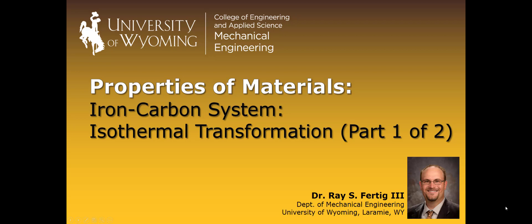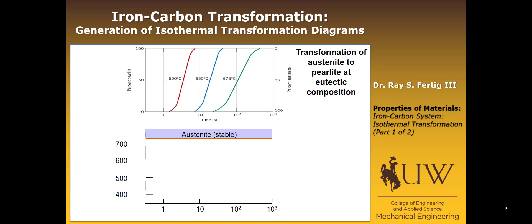In this lecture, we want to talk about the isothermal transformation of the iron-carbon system. This is part one of two. We're going to focus on what the isothermal transformation curves look like, the kinds of microstructures that we could expect from them, and then in part two we'll do some examples to show how to actually use these diagrams. So let's first think about how we generate what's called an isothermal transformation diagram.